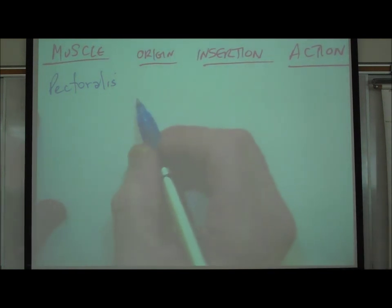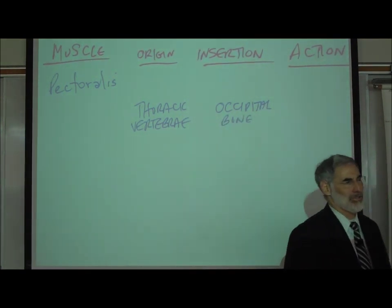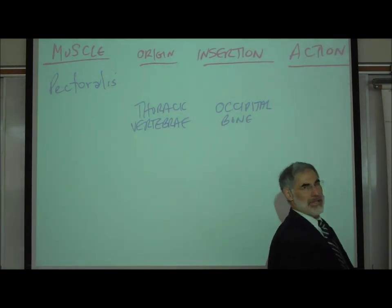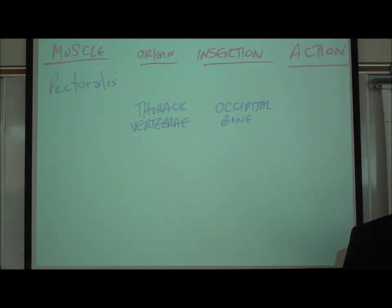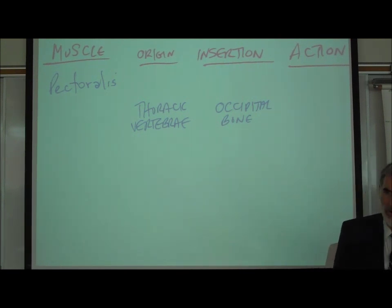Now, we could also do this. What if I told you the origin of the muscle is the thoracic vertebrae? What are you thinking, thoracic vertebrae? And it inserts on the occipital bone. That's the splenius. That's the muscle that extends and hyperextends your neck. That's in bold print. That's a major muscle. It's the antagonist of the sternocleidomastoid.